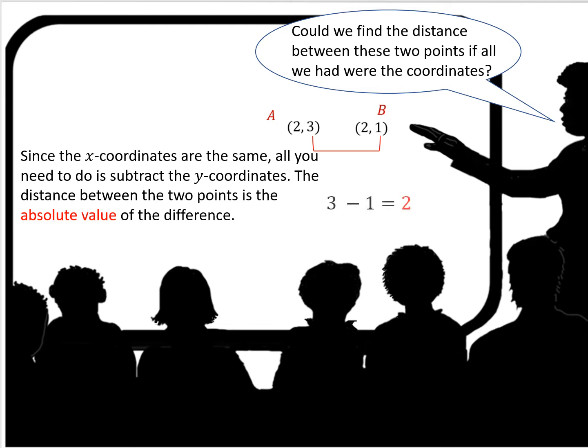The distance between the two points is the absolute value of the difference. The absolute value is the difference without the sign. In this case the sign is positive, so the distance is two. Two units, whatever the units are.